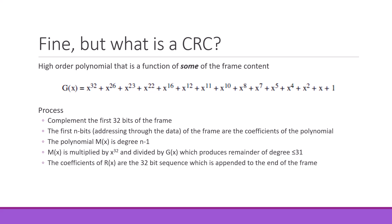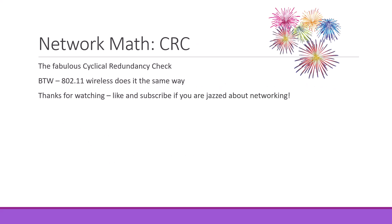The idea is that you perform this calculation on your end, send the frame across the network, and the receiver does the exact same calculation and compares the results. If the number the receiver computes matches the number appended to the frame, there are no errors in this frame. And there we have it — our first network math video: a quick look at the Cyclical Redundancy Check.